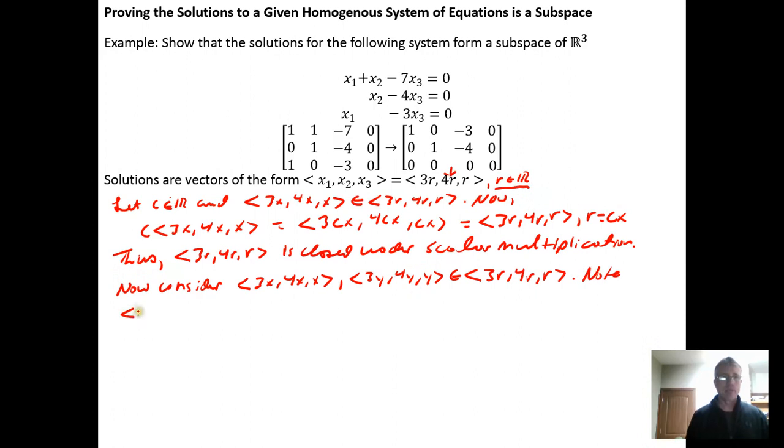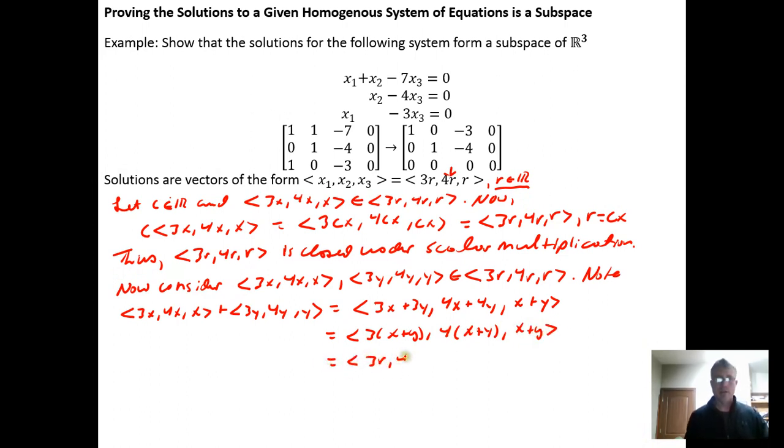Let's go ahead and add them. If we do 3x, 4x, x, plus 3y, 4y, y, we just do component by component addition. So first component plus first component, second component plus second component, third component plus third component. But notice, for the first component, the three factors off. For the second component, the four factors off. And we leave the third component alone. And this has the form 3r, 4r, r, where r is just equal to the real number you get when you add x plus y.